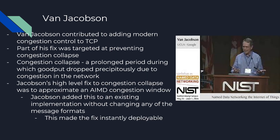Van Jacobsen contributed to adding modern congestion control to TCP, and that is what he's most known for. Part of his fix to congestion control was targeted at preventing congestion collapse, which we can define as a prolonged period in which throughput drops precipitously due to a large amount of congestion in the network. Jacobsen's high-level fix was to approximate the AIMD congestion window, and he added this to an existing implementation without changing any of the message formats. Because he did it this way, this made Jacobsen's fix instantly deployable.